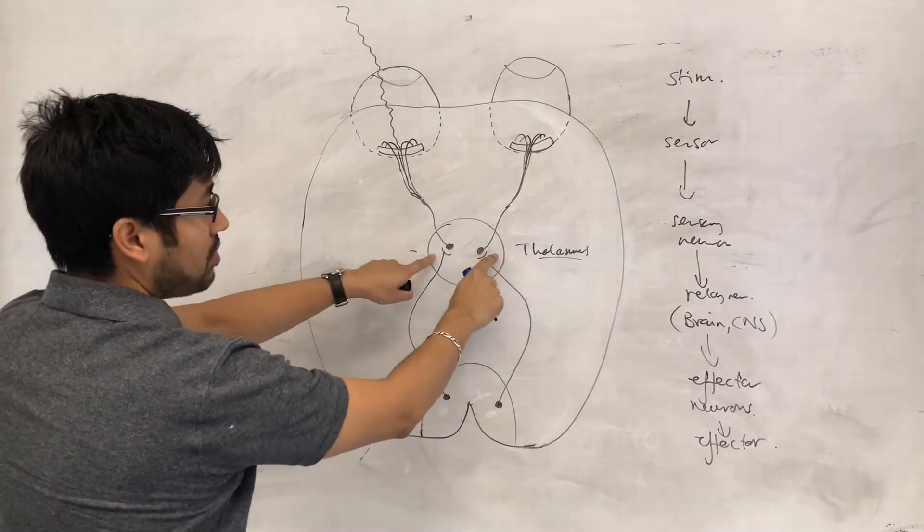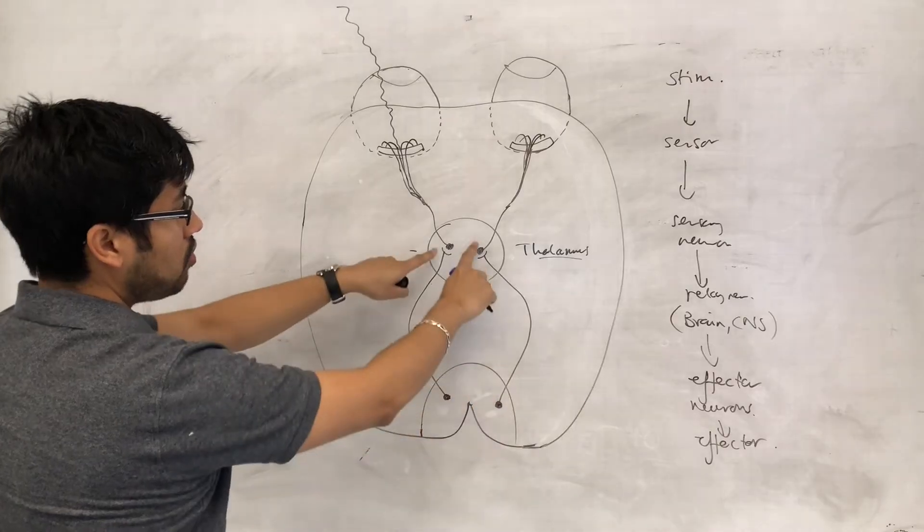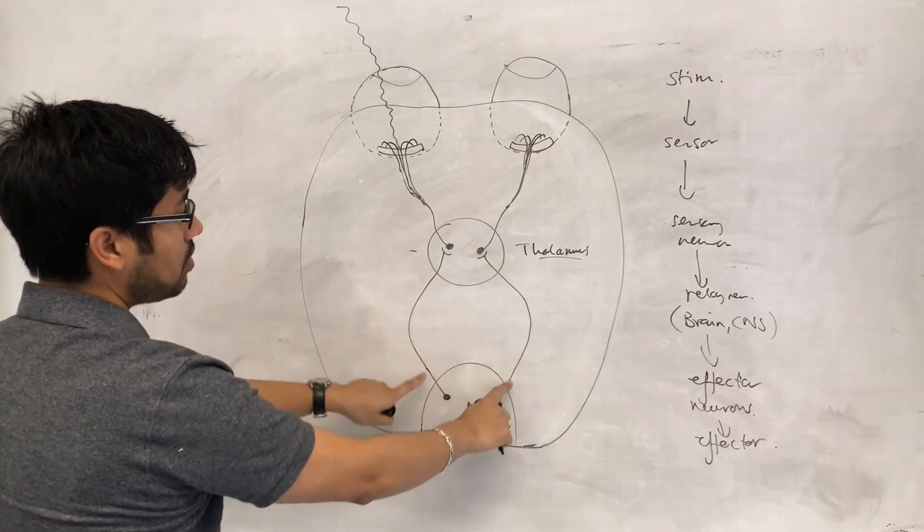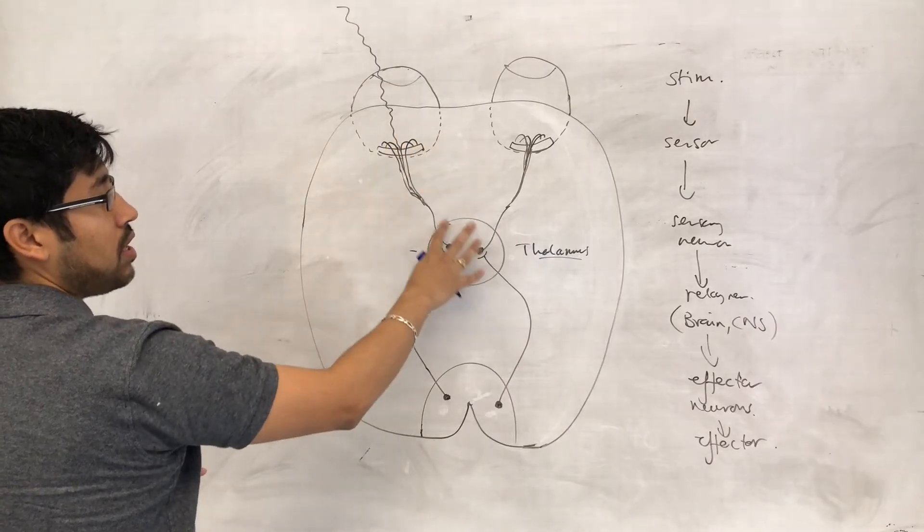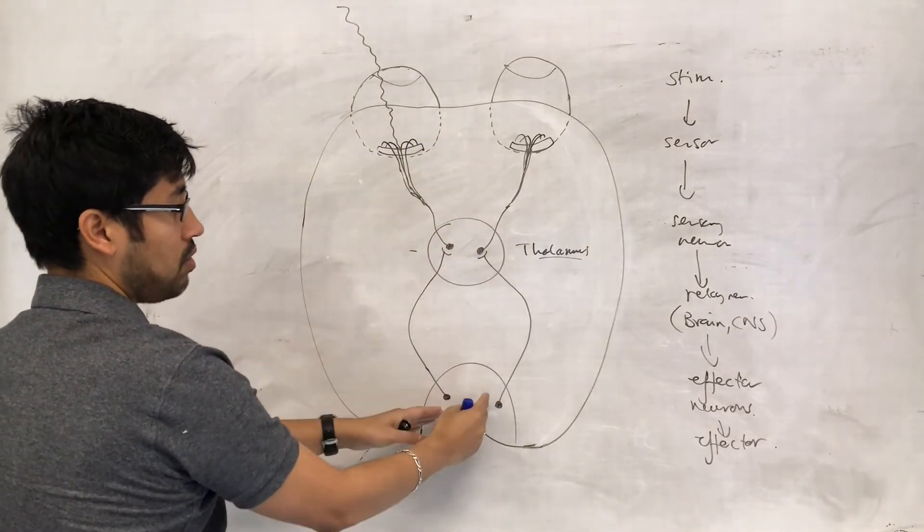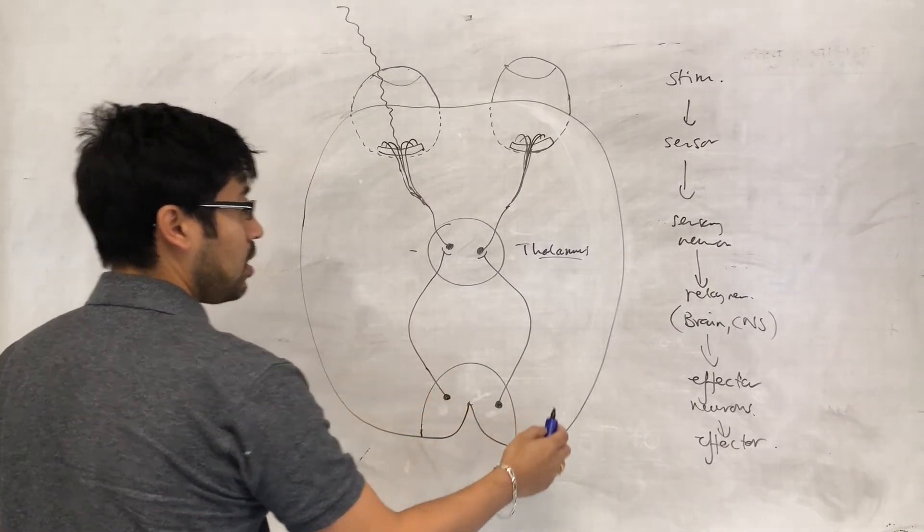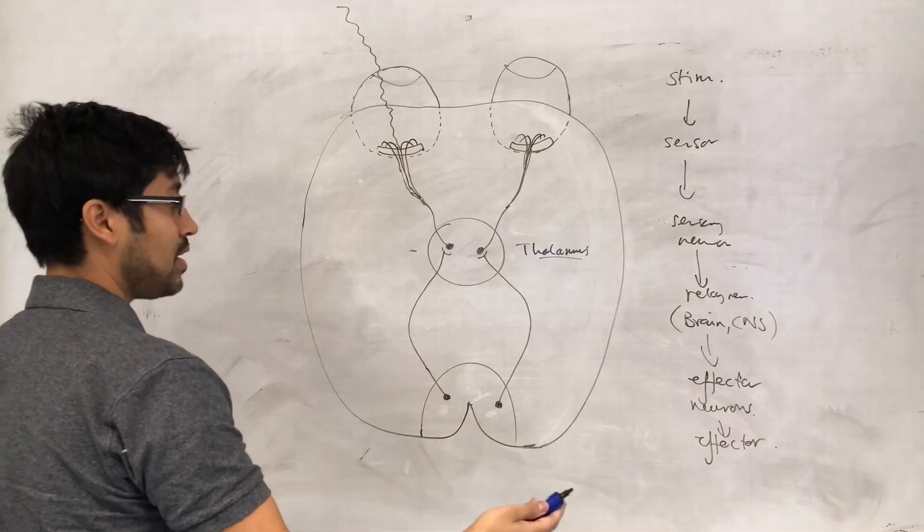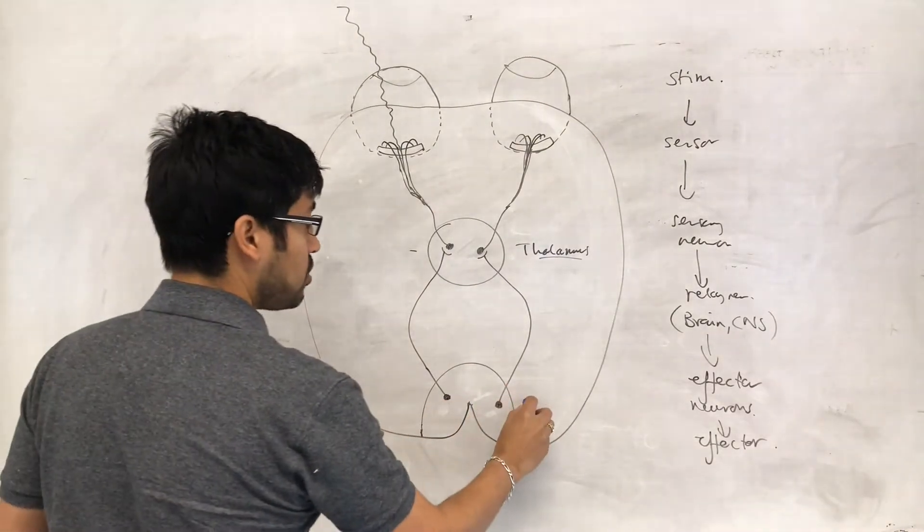And so the thalamus is drawn to do that. So we've got neurons here or nerves here showing how the information, or visual information, is passed on or appropriately routed to the appropriate processing center. In this case, the visual processing center in the brain. Okay, so visual cortex.